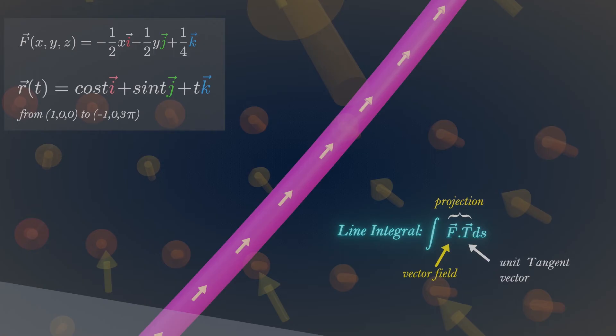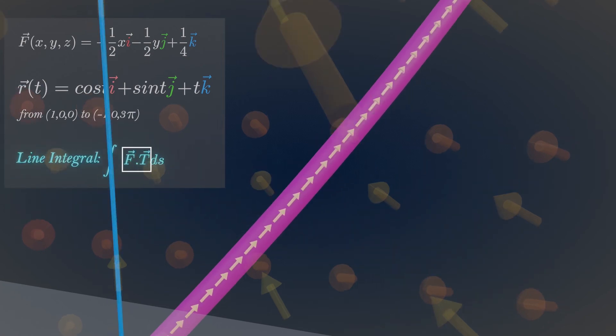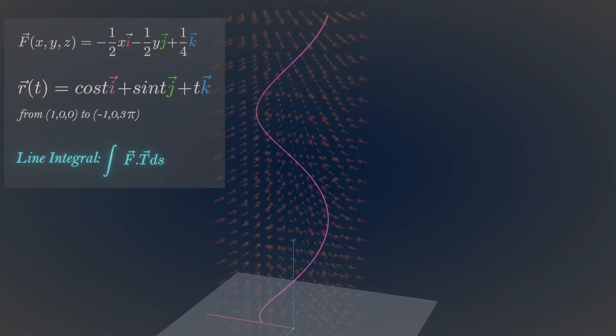For evaluating line integral, we need to add every value of this tangential force along the length of the curve. So we multiply every one of these tangential vectors with the length of the curve.